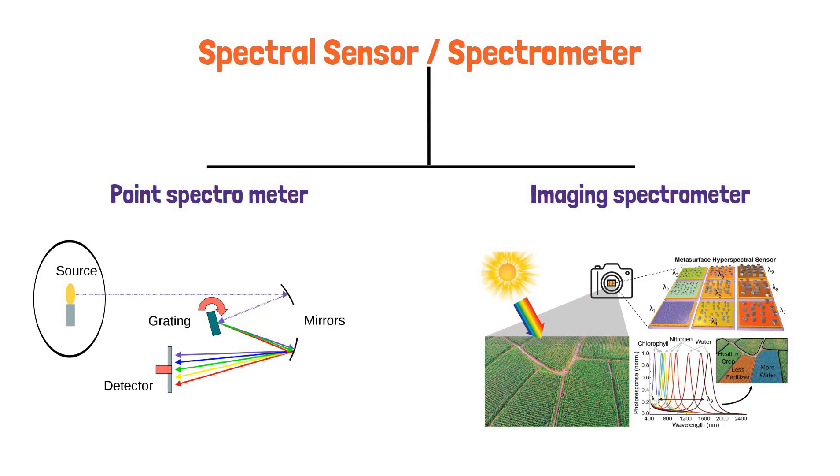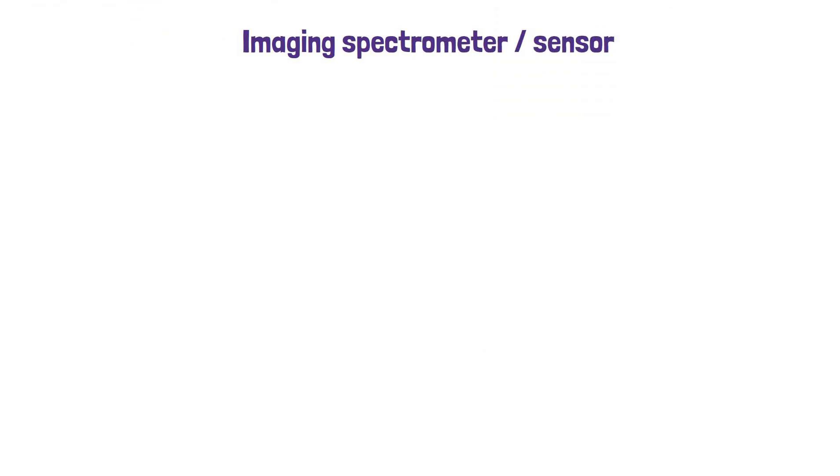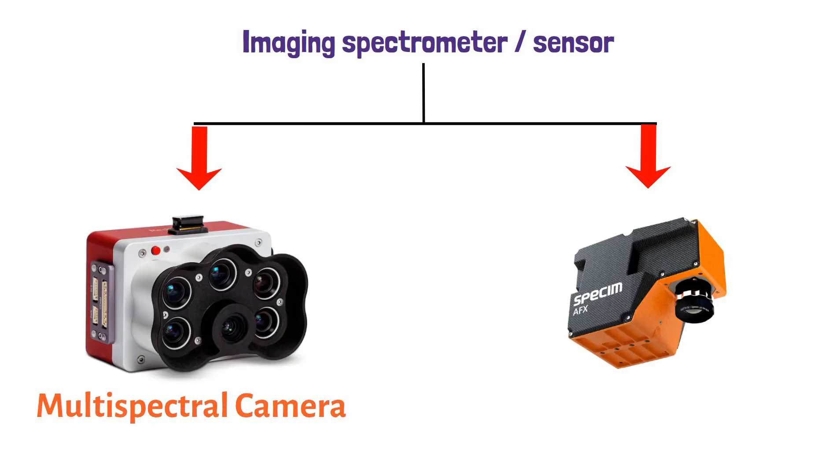Now let's talk about the types of imaging spectrometers. Generally, two types are used for agriculture application, multispectral camera and hyperspectral camera.